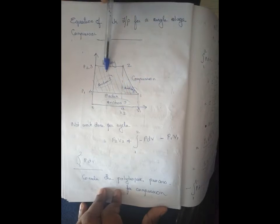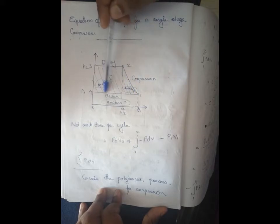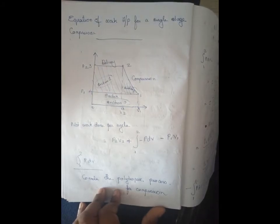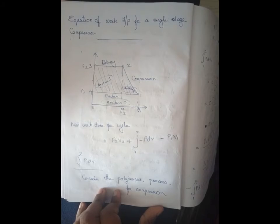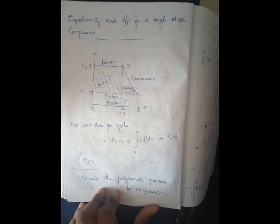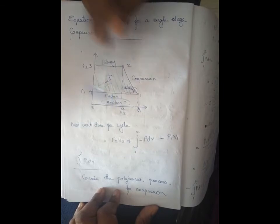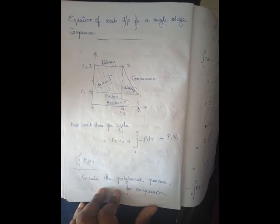That is Section 2. The total work area is Section 1 plus Section 2. That is Section 3. The net area equals Section 1 plus Section 2 minus Section 3. Section 1 is a rectangle.